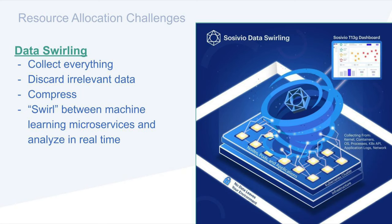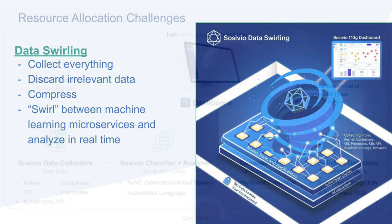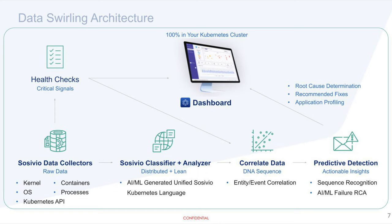Let's briefly discuss how data swirling works, as it's a key component to how Sysivio is able to make use of massive amounts of data in real time. At a high level, we collect everything from the kernel, OS, network, processes, applications, container runtime, and Kubernetes API. We determine what pieces of data are relevant by immediately evaluating every data point collected. We only analyze currently relevant data within our set of machine learning microservices. Data is processed and analyzed 100% in memory and immediately swirled to the next machine learning microservice for processing.